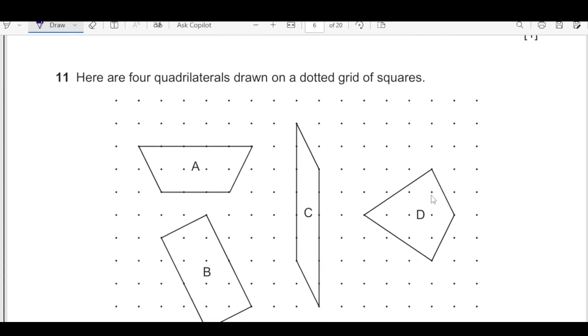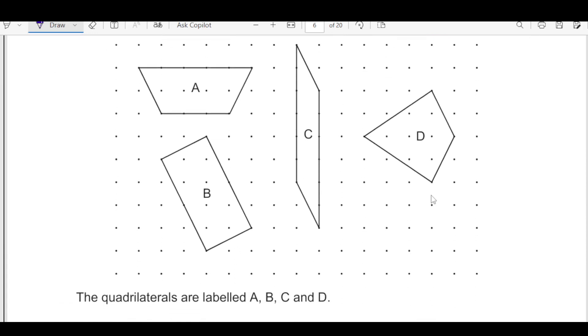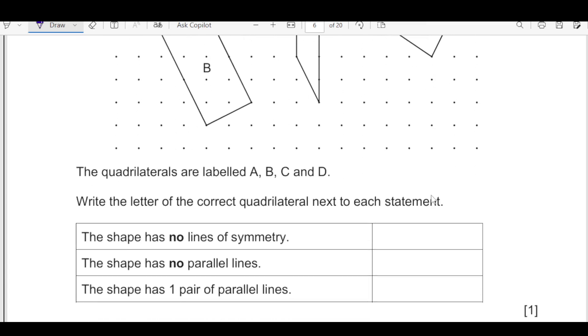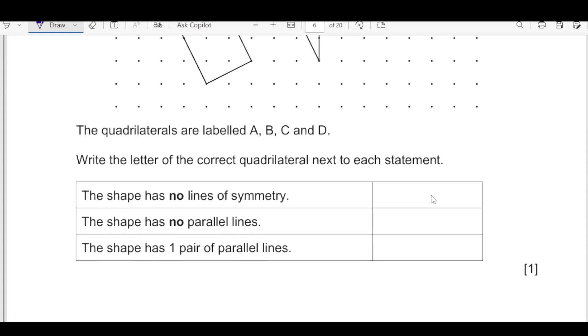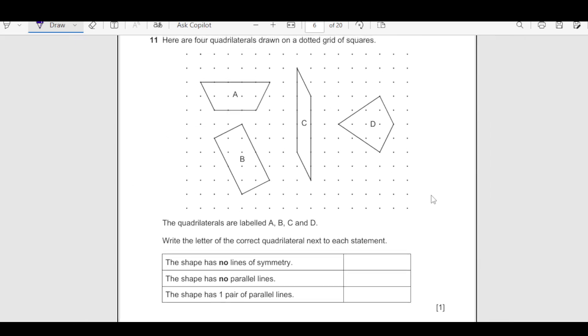Number 11. Here are four quadrilaterals drawn on a dotted grid square. The quadrilaterals are labeled as A, B, C, D, E. Write down the letter of the correct quadrilaterals next to each. The shape has no line of symmetry. We have this C shape which does not have any line of symmetry. The shape has no parallel lines. D shape does not have any parallel line. So we will write down D here.